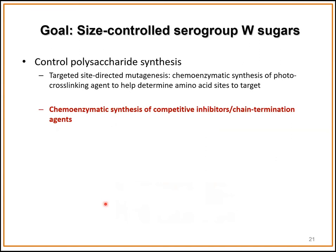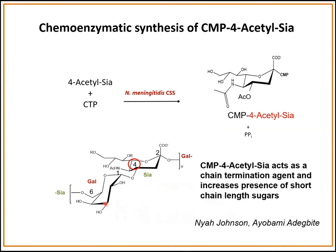Another method we're using to control polysaccharide synthesis is through use of competitive inhibitors or chain termination agents. We are using 4-acetyl sialic acid in this work, using the enzyme CMP sialic acid synthetase to make CMP-4-acetyl sialic acid, and we expect this will be a chain termination agent that increases the presence of short chain length sugars. Naya, an undergrad in the lab, as well as Ayabami, a PhD student, performed this work. We did see an increase in the presence of short chain length sugars using CMP-4-acetyl sialic acid and the serogroup W capsule polymerase.